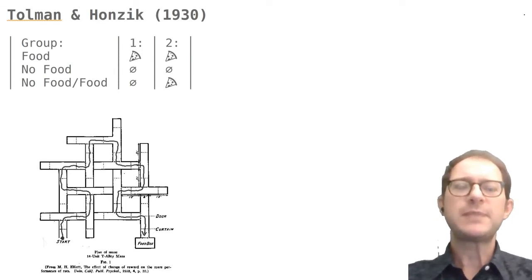As I mentioned, the purpose of the experiment was to see if rats would learn the route to the food by just learning a rote series of turns, or rather by learning a mental map of the maze. To do this, Tolman and Honzik included three groups of rats in their experiment, each trained in two phases.